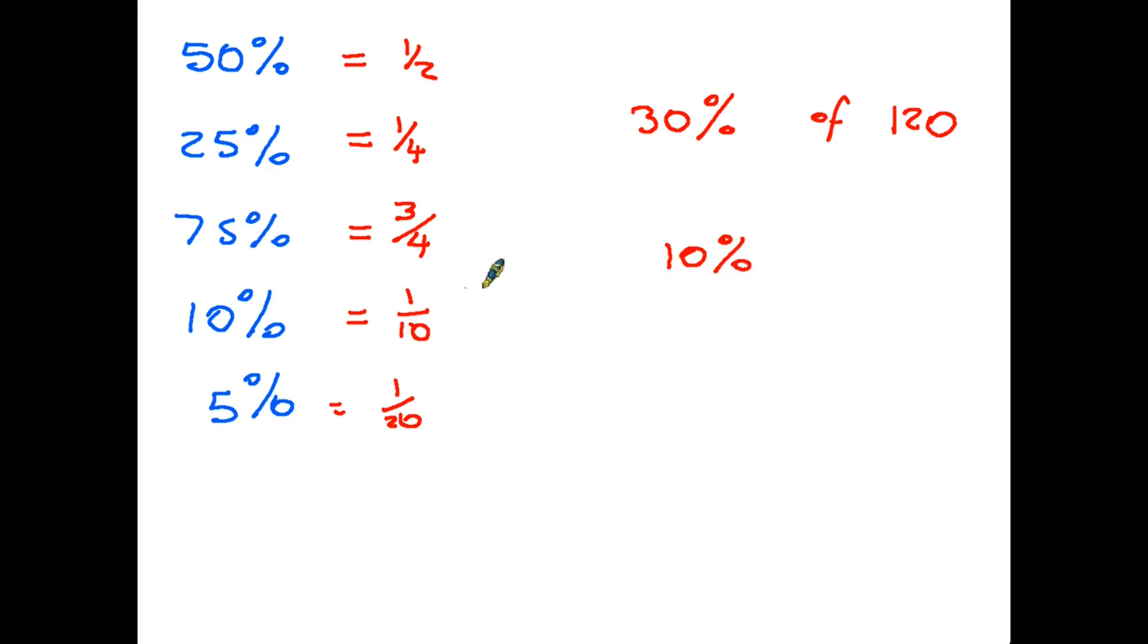We have 10 percent. Now 10 percent is one tenth, in other words it's just divided by 10, so 120 divided by 10 equals 12. So if 10 is 12, that means another 10 percent is also 12, and another 10 percent is also 12. 10, 20, 30 percent - add them together, and the answer is 36.